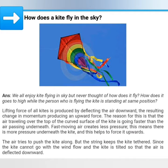Fast moving air creates less pressure. This means there is more pressure underneath the kite, and this helps to force it upwards.